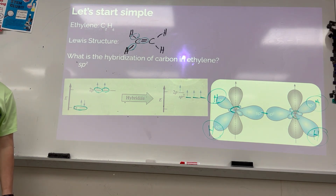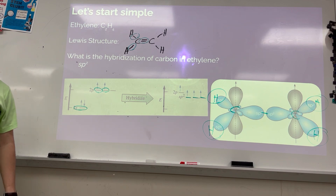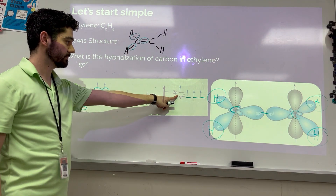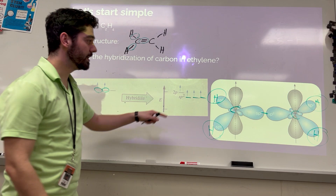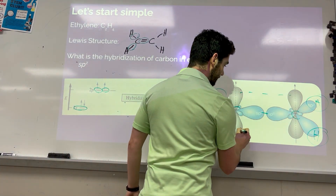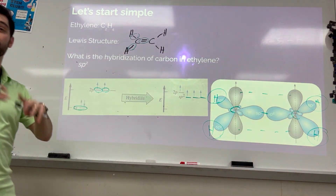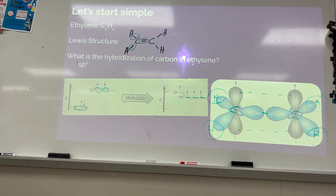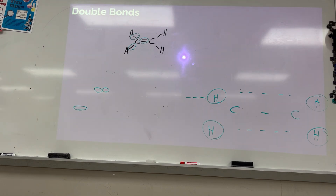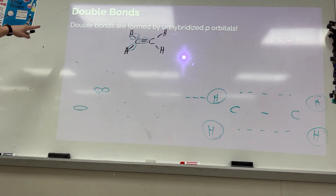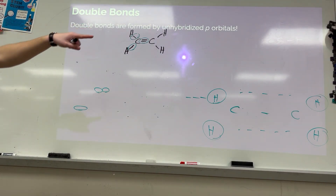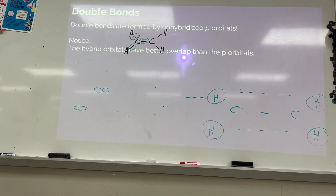But I need to make a double bond — do I have another orbital I can use? The gray one, which is called the 2p orbital. That's where I get the double bond: the leftover p orbitals. Double bonds are formed by unhybridized p orbitals — it's the leftovers that overlap to make the second bond.